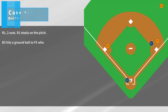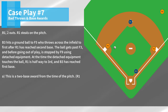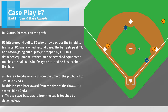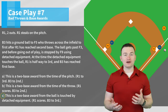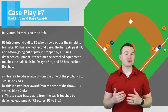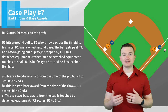Case play number seven: R1, two outs. R1 steals on the pitch. B3 hits a ground ball to F5, who throws across the infield to first after R1 has reached second base. The ball gets past F3, and before going out of play, is stopped by F9 using detached equipment. At the time the detached equipment touches the ball, R1 is halfway to third and B3 has reached first base. The correct answer is C — this is a two base award from when the ball is touched by detached equipment, R1 scores, B3 to third. Detached equipment is enforced from the time the infraction occurs, so we don't need the time of the pitch or the time of the throw.